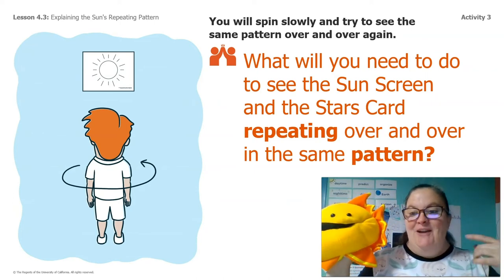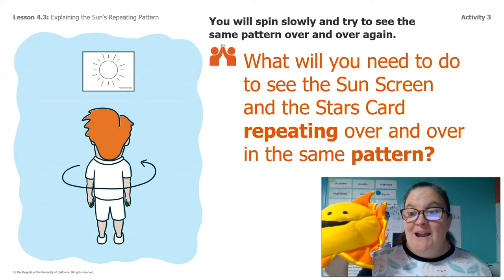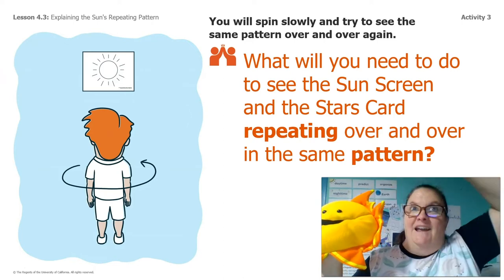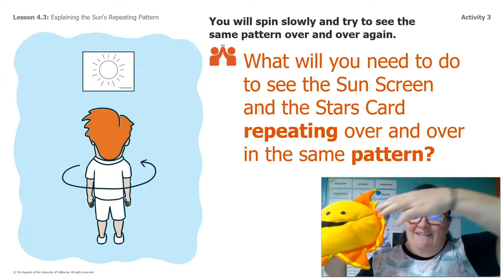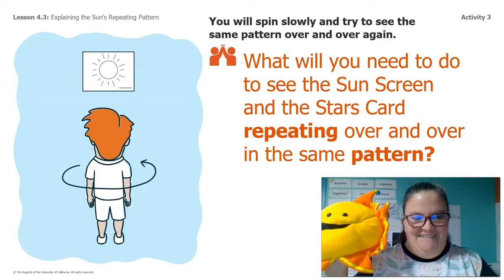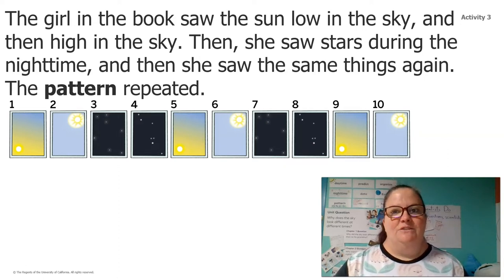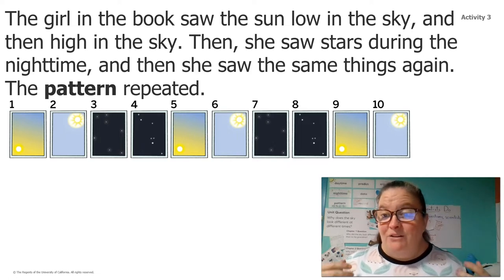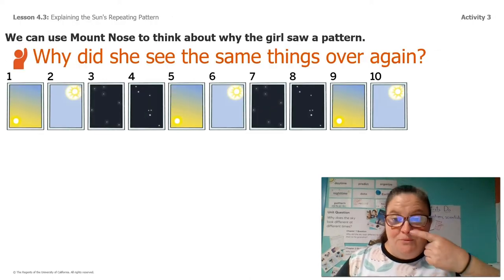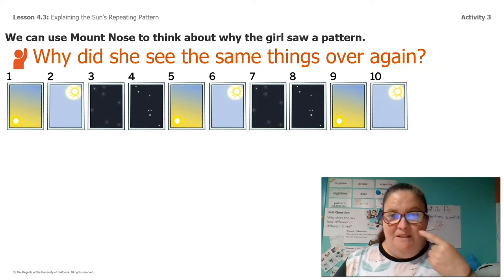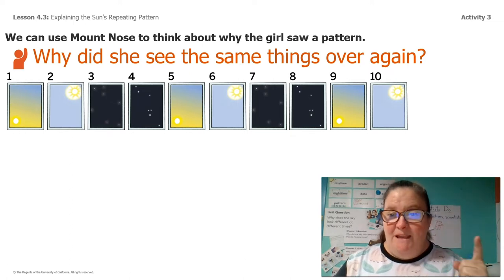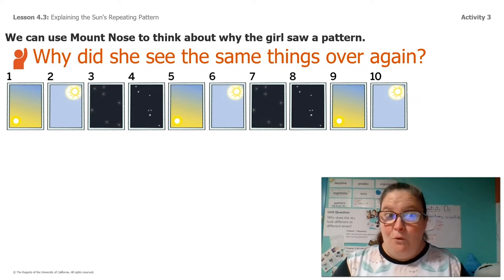You're gonna spin slowly and try to see the same pattern over and over again. What will you need to do to see the sun screen and then the stars card repeating in the same pattern? If you're looking at the screen you're looking at the sun, and any time you're turned directly behind you, you're looking at the stars. You're gonna have to spin around and around. Go ahead and spin so that you see the sun, and then behind you, and then the sun, and then behind you. The girl in the book, What Spins, saw the sun low in the sky, then high in the sky, then she saw stars during the nighttime, then she saw the same things again. The pattern repeated.